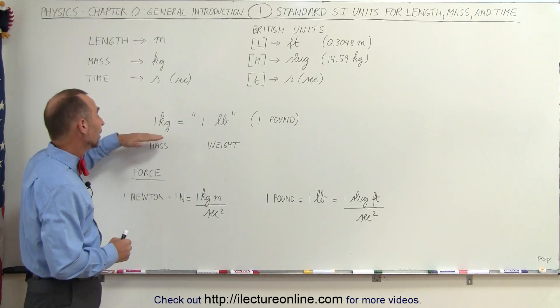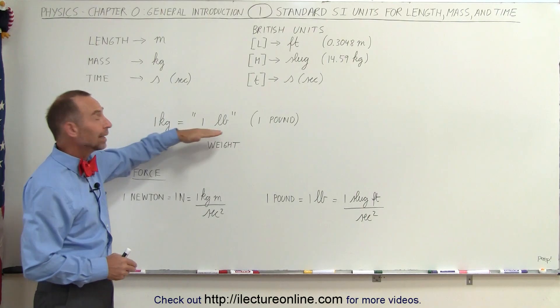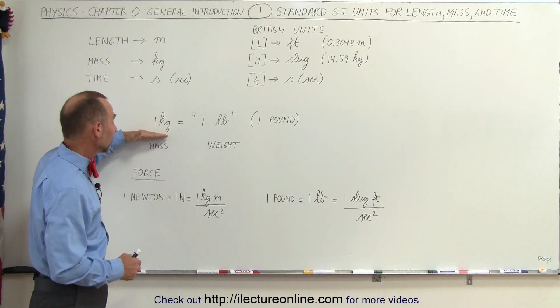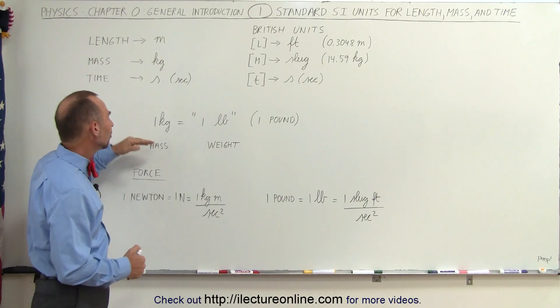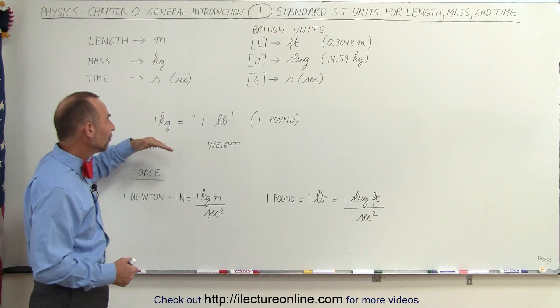So technically speaking, a kilogram, of course, cannot be related to a pound because a kilogram represents mass, a pound represents weight. But for the equivalency, you can say that one kilogram is roughly about, we shouldn't put one there because it's not.